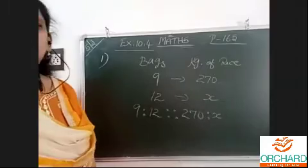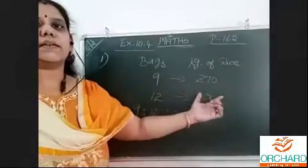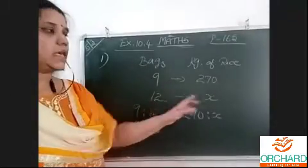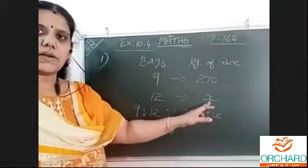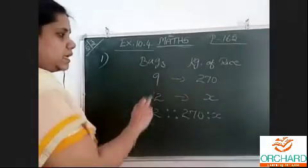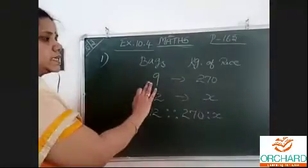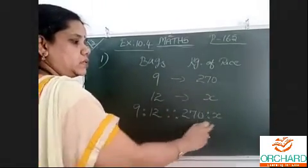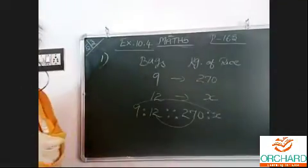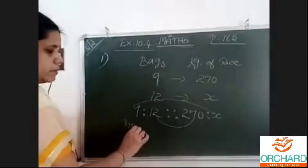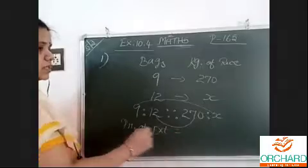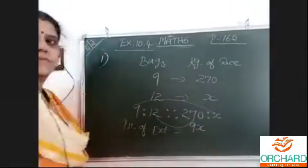Whichever question is like this, you can write like this: this many bags, this many kg, this many we want — that is x. Sometimes x comes on this side also: if they give kg and ask how many bags, then I will write x there. That's all. For this question: 9 is to 12, proportionate to 270 is to x. Now the normal process — product of extreme, product of means, just as we did all other sums yesterday. Product of extreme: 9 × x = 9x.